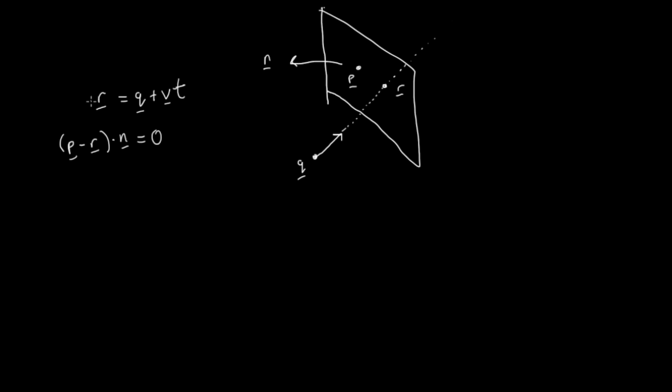So what if I substitute this expression for R in place of R in the vector equation of a plane? So we have P minus R, which is actually going to be Q plus VT. Because we're subtracting it, it's Q minus VT. That's dot product with our normal vector N. And that equals zero. So what we can do here is now we have this expression. We could rearrange this so that T is the subject.